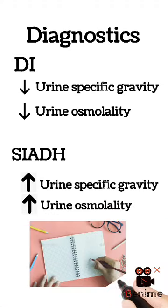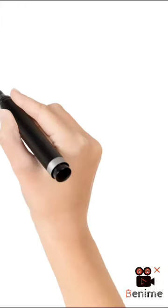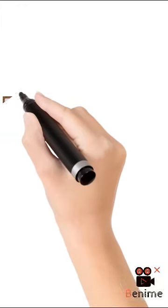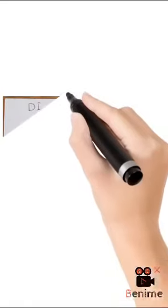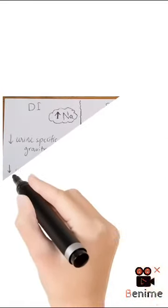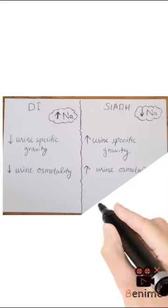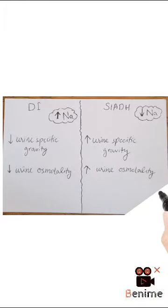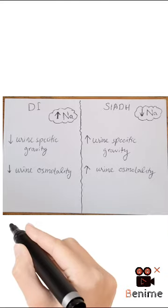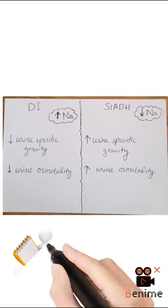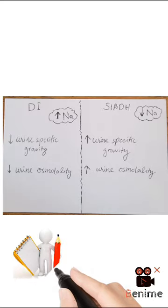Here is a picture of the notes that I made to remember this information. Diabetes insipidus have high sodium levels and the other values are down, which means low urine-specific gravity and decreased urine osmolality. On the other hand, syndrome of inappropriate diuretic hormone have decreased sodium level and the other values are up, means high urine-specific gravity and high urine osmolality.